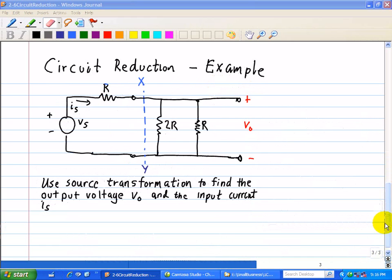So let's analyze this example using circuit reduction. Here, we want to use a source transformation to find the output voltage V0 shown here, and the input current IS shown here.